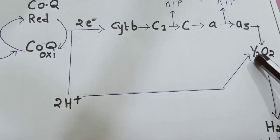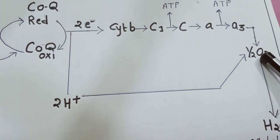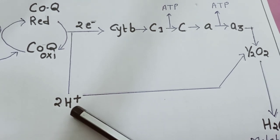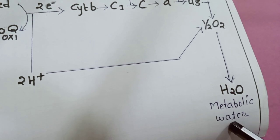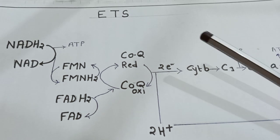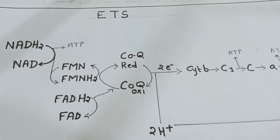We refer to nascent oxygen, which is why we write half O2. When this oxygen receives the electron, it becomes negatively charged. This negatively charged oxygen reacts with protons to produce H2O — water. This water is known as metabolic water, because it is not absorbed by roots but is produced during the metabolic breakdown of glucose. This concludes our discussion of ETS, or terminal oxidation.